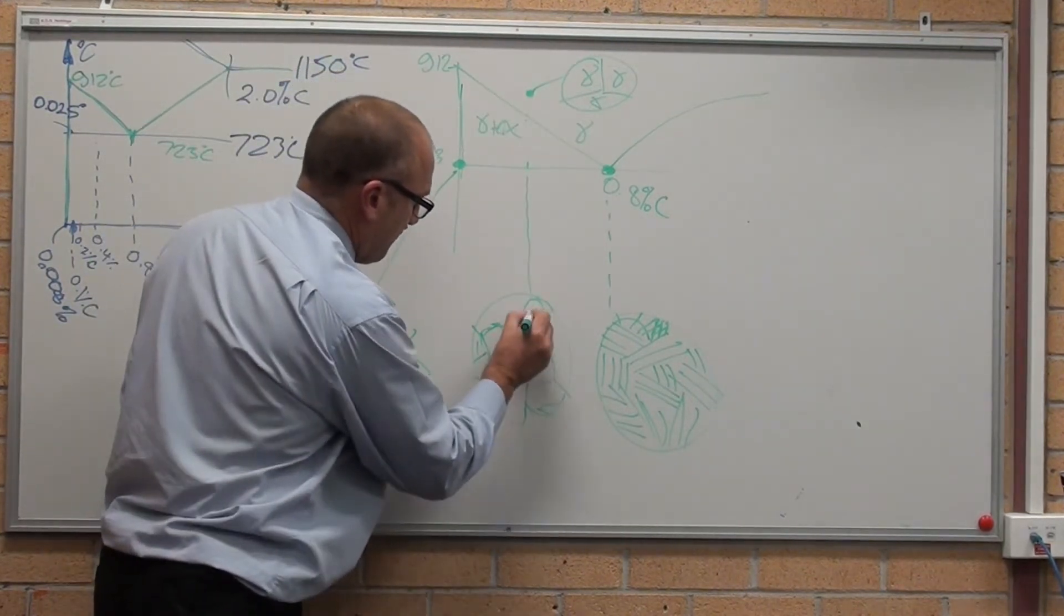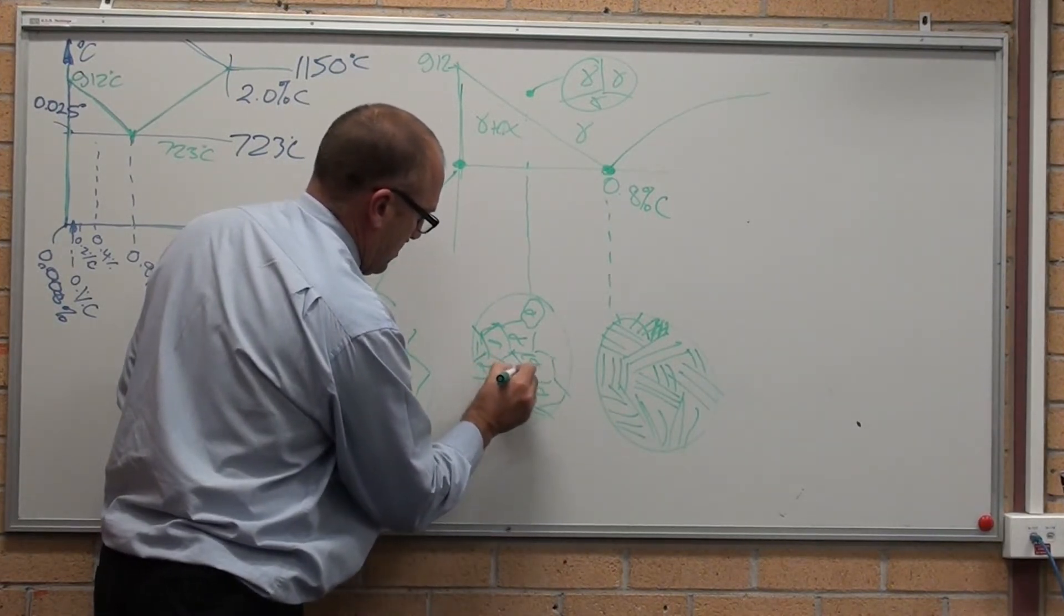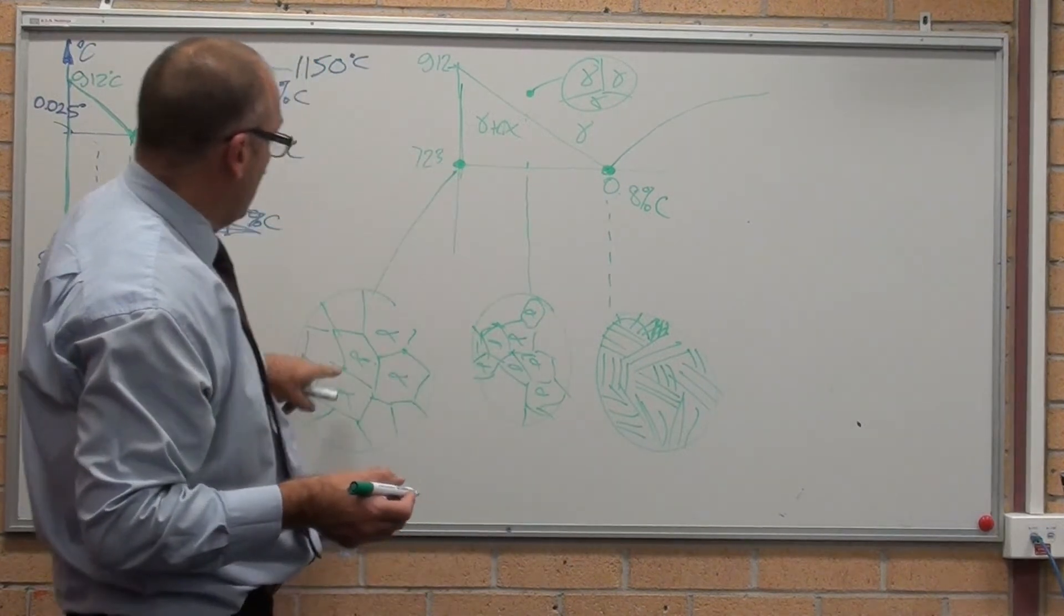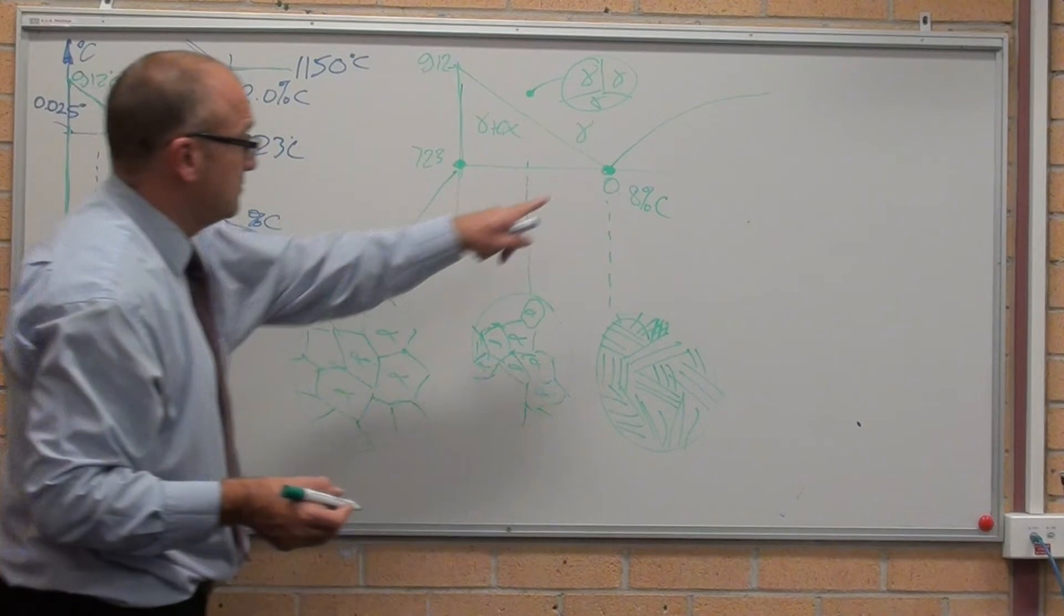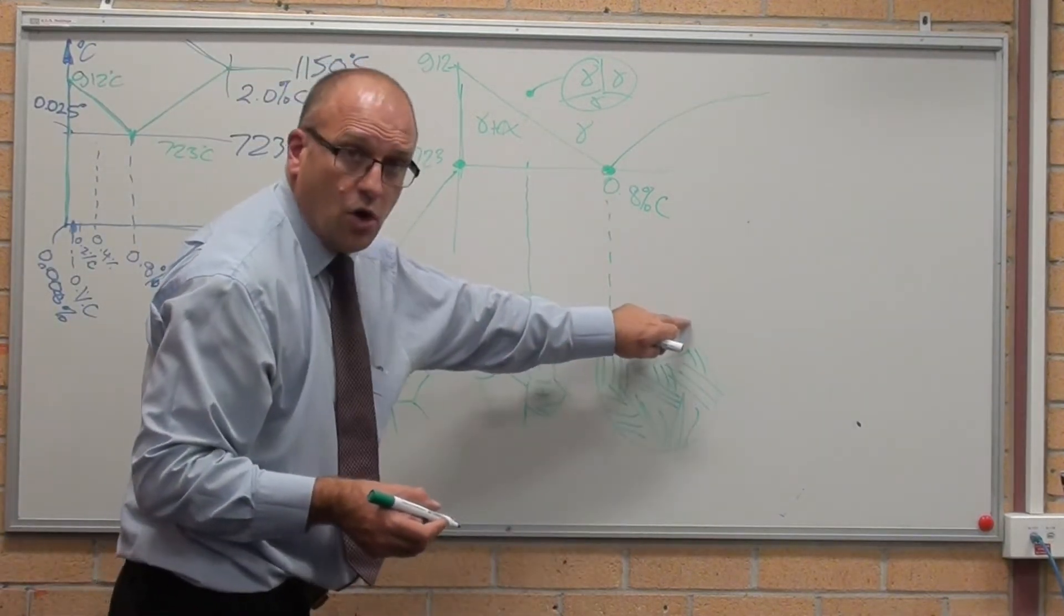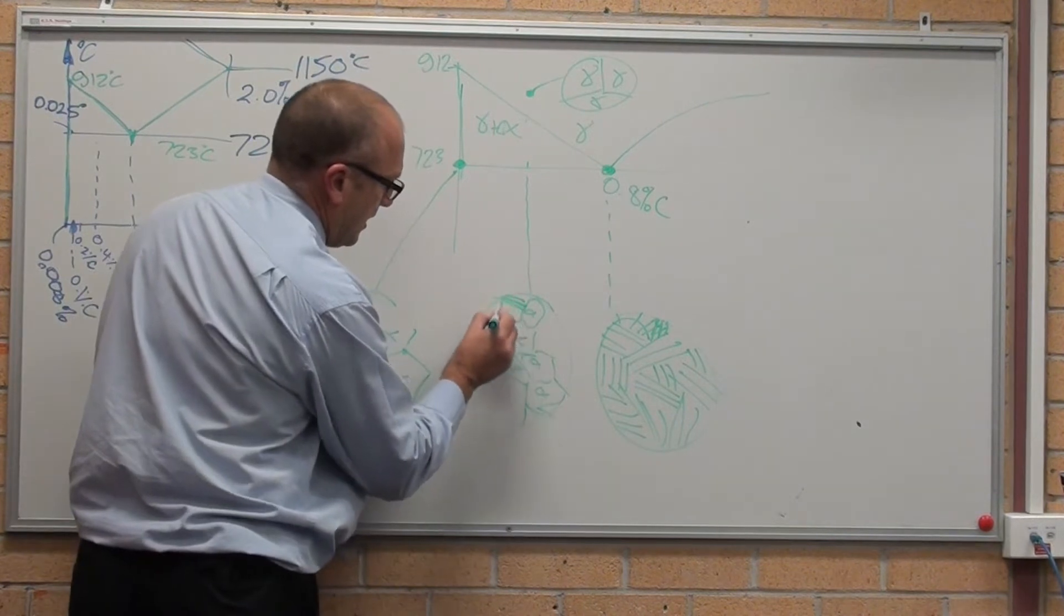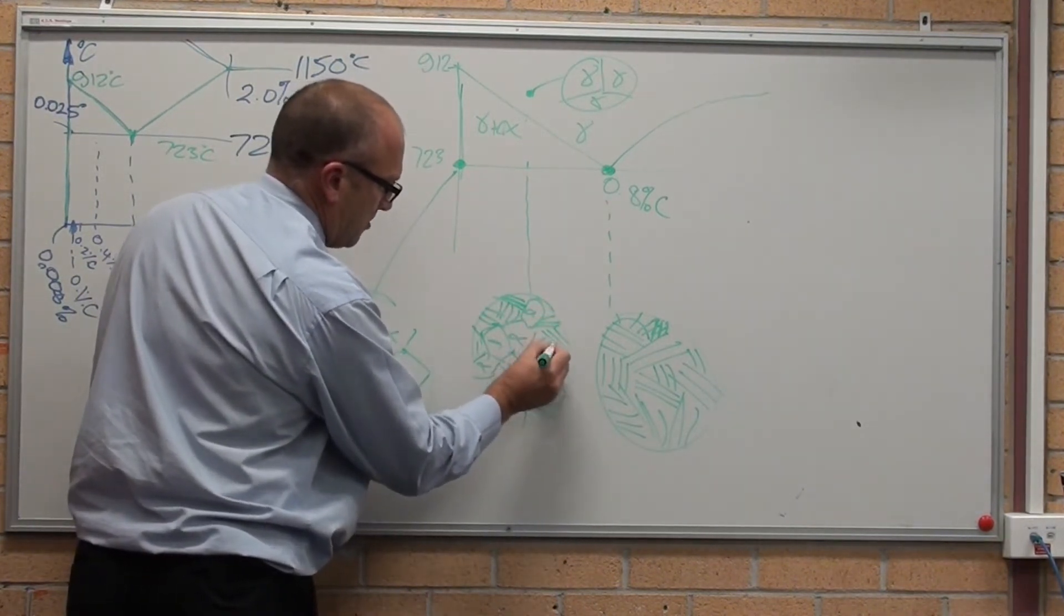So here we've got the ferrite, ferrite, and that's about half. So if 0% carbon is ferrite, 0.8% carbon is pearlite, halfway between is half ferrite, half pearlite. Kind of makes sense, doesn't it?